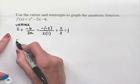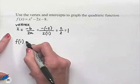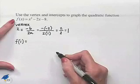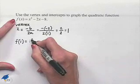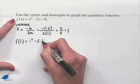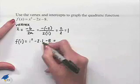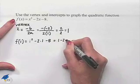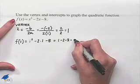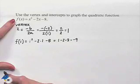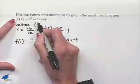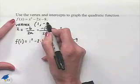To find the y-coordinate of the vertex, we now substitute the value of 1 into our function. That's going to give us 1² - 2(1) - 8. That's 1 - 2 - 8, which gives us the value of -9. So our vertex is going to have coordinates (1, -9).